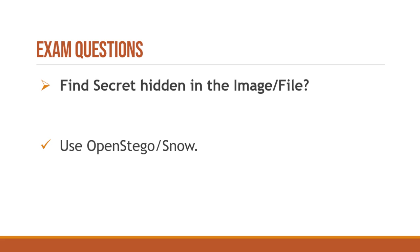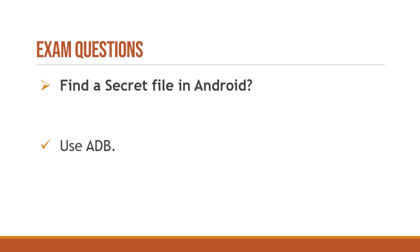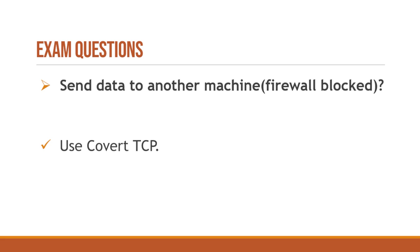For steganography questions — finding a secret in an image or file — use OpenStego for images and SNOW for files; both tools are installed on your Windows box. For the Android question, where you need to find a secret file in an Android device, use ADB (Android Debug Bridge) to connect to the Android device, access its file structure, and retrieve the secret file.